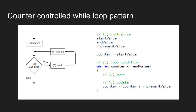Let's look at the counter-controlled loop pattern. Here for reference, I have the four steps of a good loop: we initialize our conditional variables, check a condition, and if the condition is true, we do some work. The last thing we do is update the conditional variables before rechecking the condition. We're going to do the same four steps for a counter-controlled loop, but the way we set it up is a little bit different.